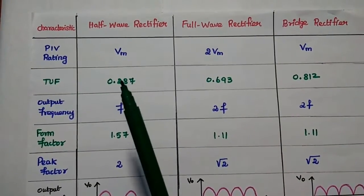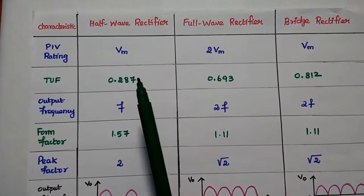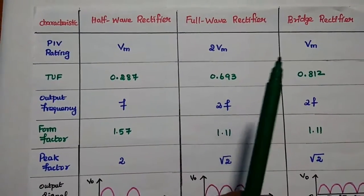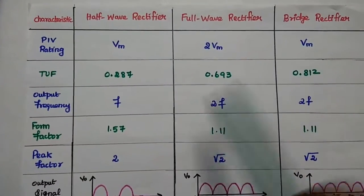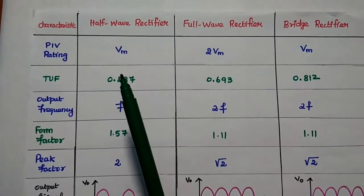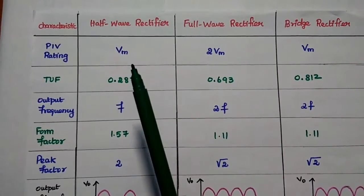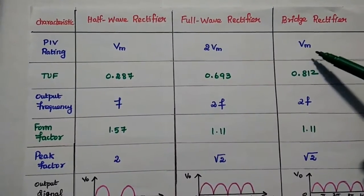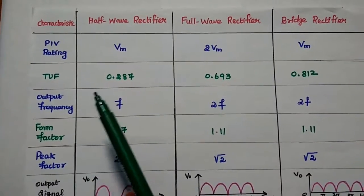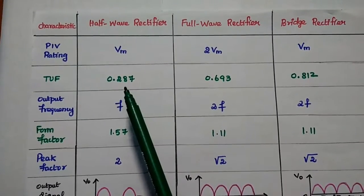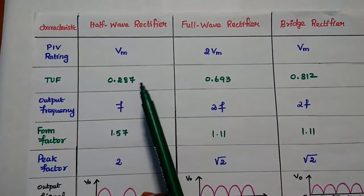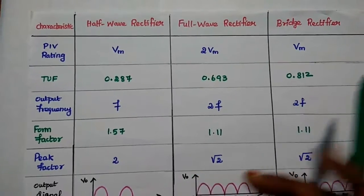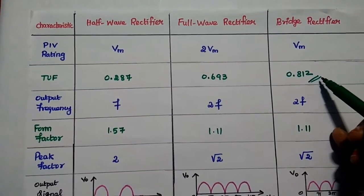The peak inverse voltage rating for the half wave rectifier is Vm. For the full wave rectifier, its value is 2Vm, which is a major drawback. For the bridge rectifier, its value is only Vm. The transformer utilization factor for the half wave rectifier is 28.7%, for the full wave rectifier it is 69.3%, and for the bridge rectifier it is 81.2%, which is why the bridge rectifier is widely used in many real-time applications.